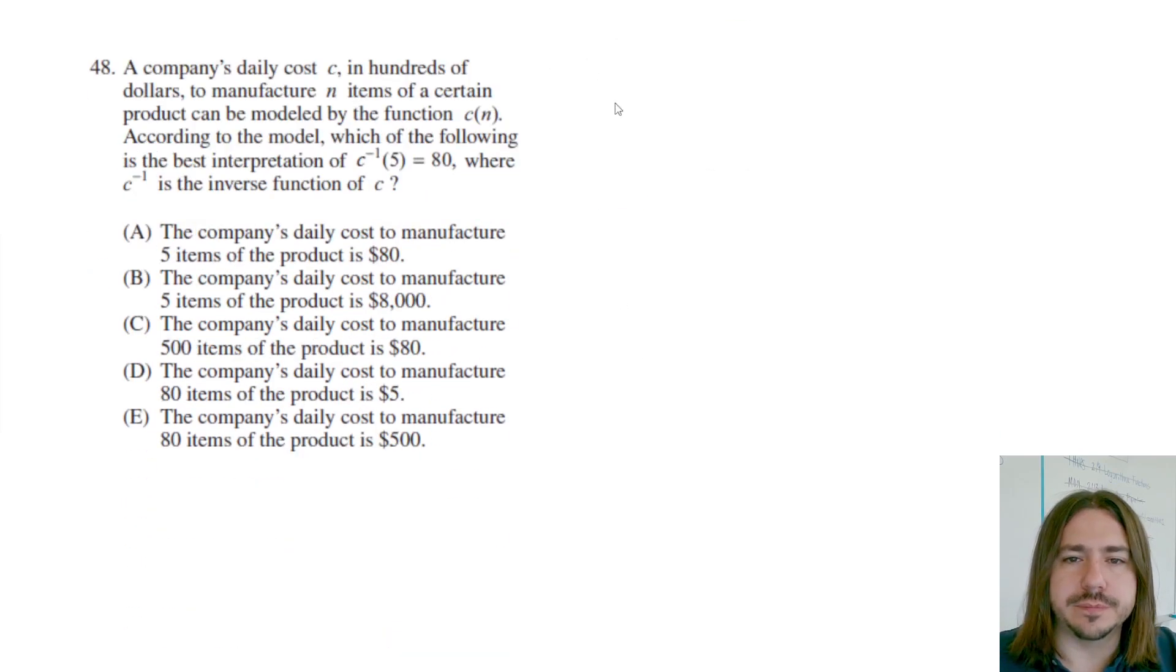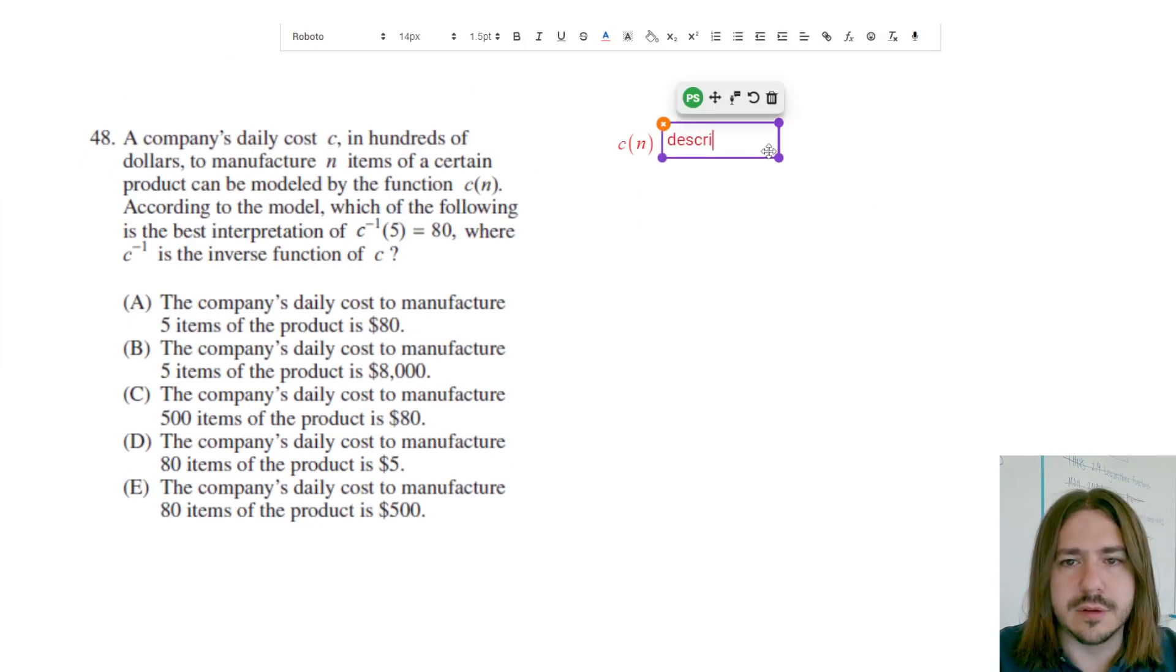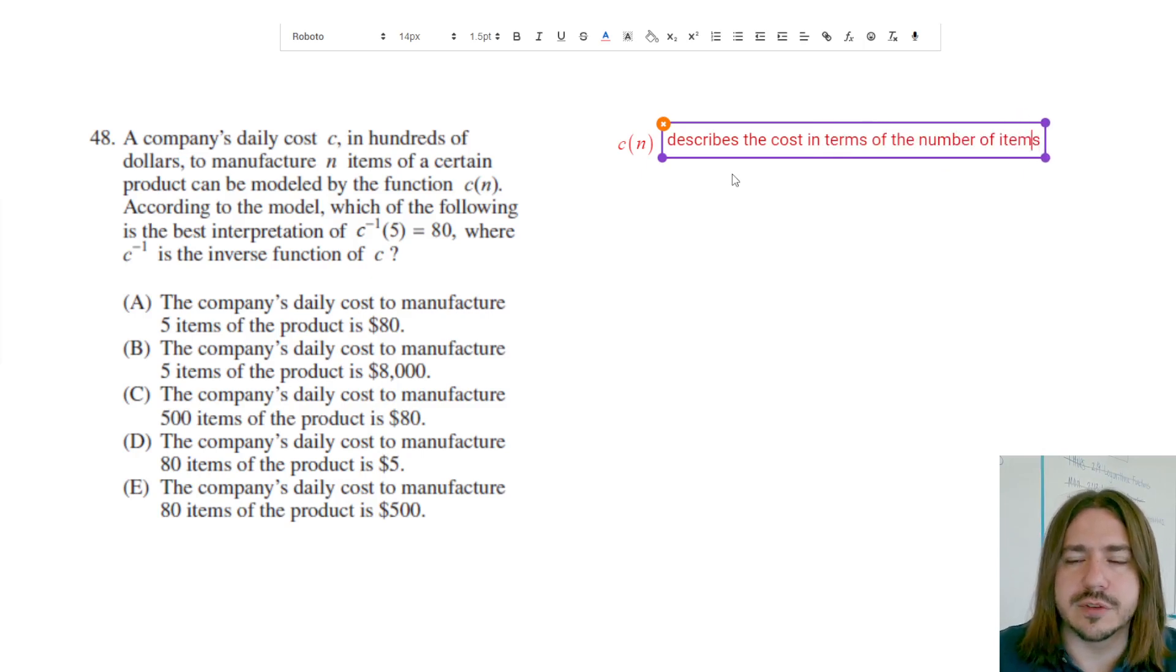C of n describes the cost in hundreds—I'm just gonna say this a little bit more briefly—describes the cost in terms of the number of items, okay. So it's the cost C in terms of the number of items n.